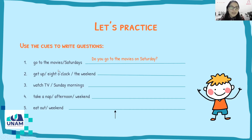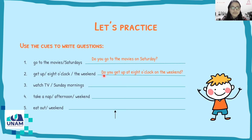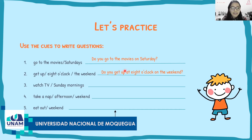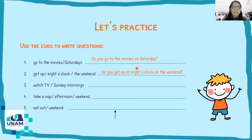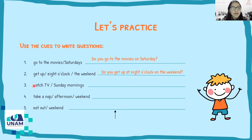Number two: 'get up at eight o'clock on the weekend.' We also don't have the subject here, so we can say: 'Do you get up at eight o'clock on the weekend?' Number three: 'watch TV Sunday mornings.' The same case — we can use 'do' or 'does' because we don't have the subject, so: 'Do they watch TV on Sunday morning?'